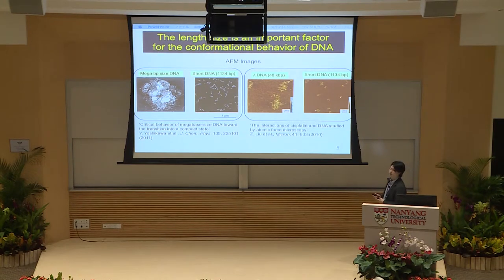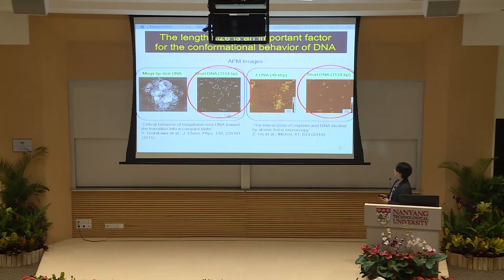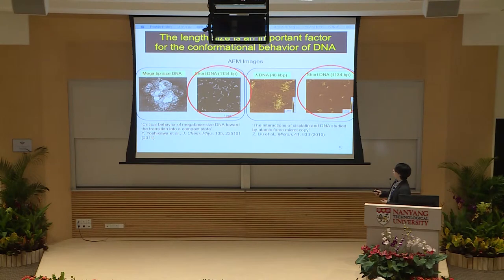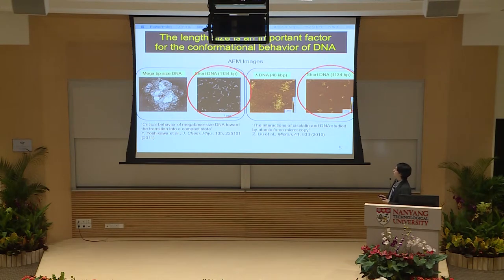This is another example of why size is an important factor in DNA conformation. In these AFM images, it is clear that the short fragment remains in a dispersed state under the condition that causes a dense loop structure for long DNA. This result also indicates that size is an important factor for the packaging process of DNA. Therefore, we use the giant DNA T4-GT7 DNA for observation of higher-order structure of DNA.